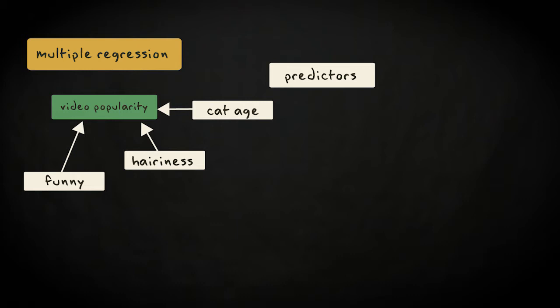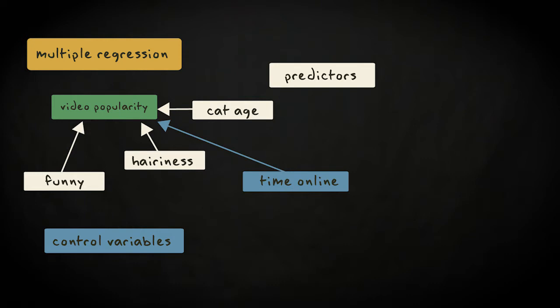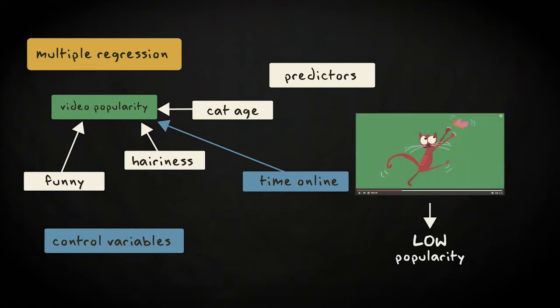I can also add variables to control for their possibly confounding influence. For example, the time a video has been available online will influence its popularity. It has nothing to do with the attractiveness of the video, but it might explain why some videos of very cute and funny kittens aren't as popular as expected, and some videos of older cats are more popular than expected.